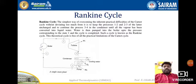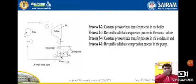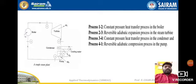The four major components are: boiler, turbine, condenser, and pump. Now looking at the processes: the 1 to 2 process is a constant pressure heat addition process in the boiler, where heat is added with the help of a heating coil.